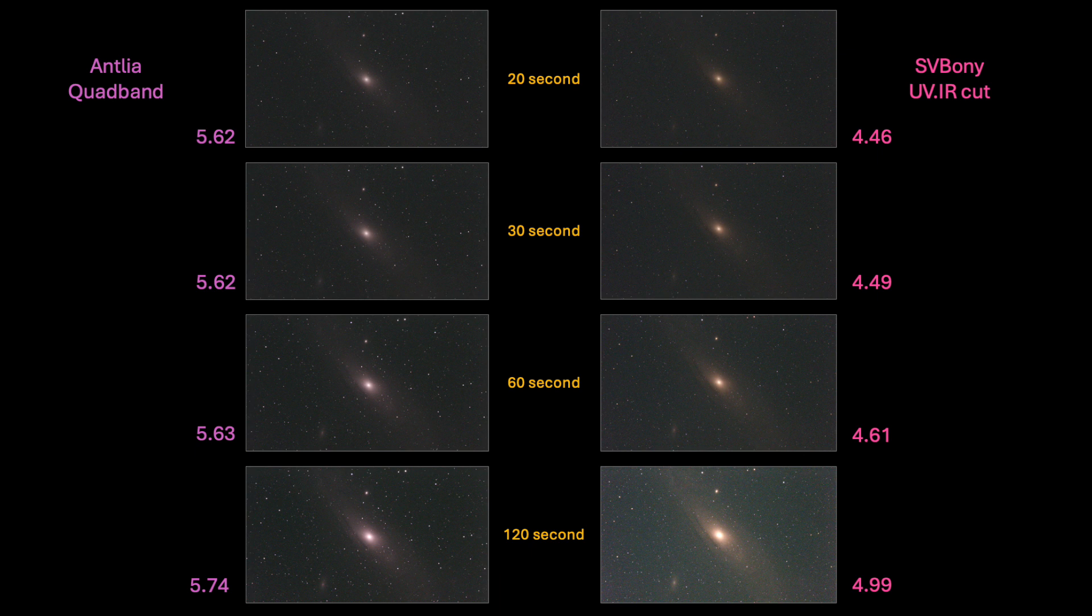It can also get a good feel for the remarkable ability of the quad band filter to cut through the ambient light pollution of the city of Yokohama. Keep in mind also that the quad band images were taken earlier in the night, mostly before midnight, whereas the UV-IR cut filter images were taken during the late night at the darkest hours.